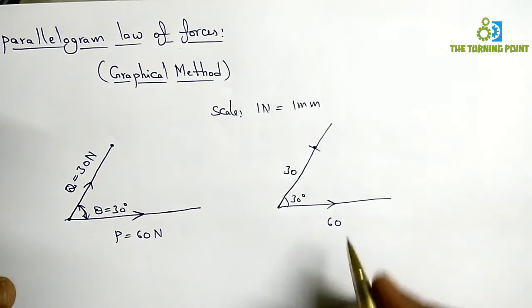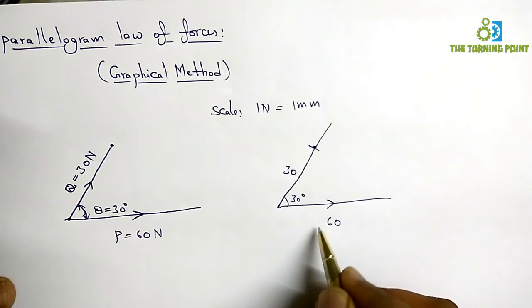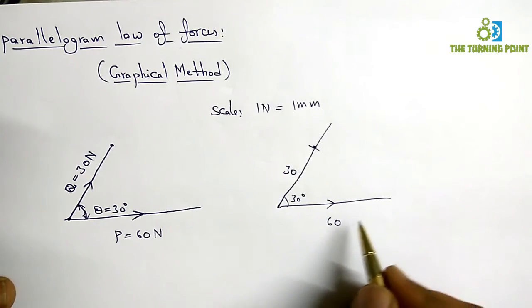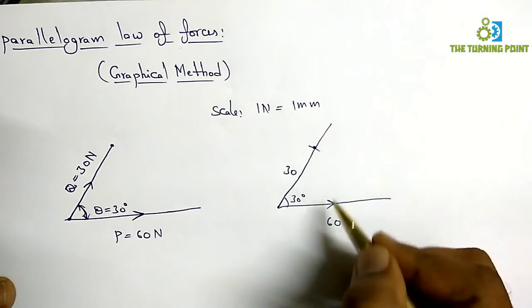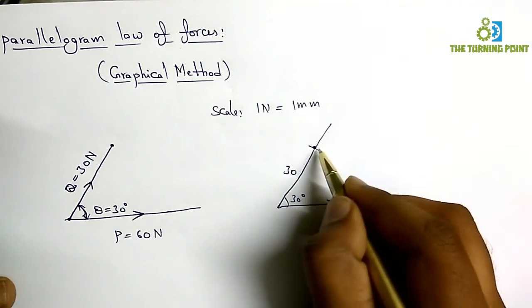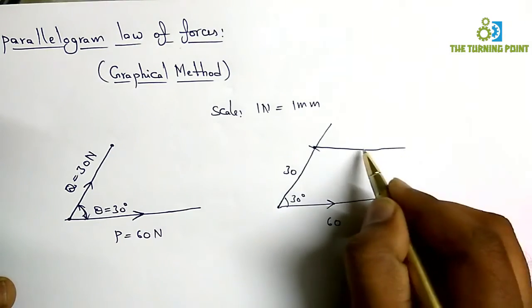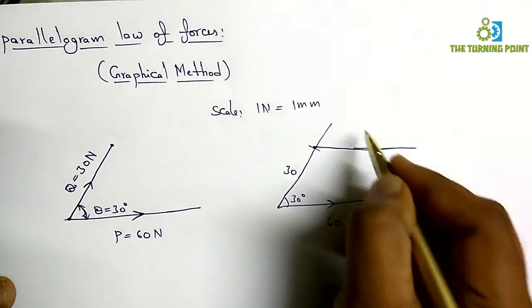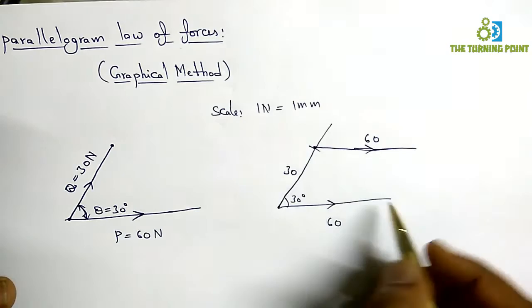Now, as per the statement, construct a parallelogram. Based upon the properties of parallelogram, opposite sides are equal and parallel to each other. Now draw a line which is 60 mm length and parallel to this side.